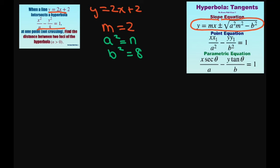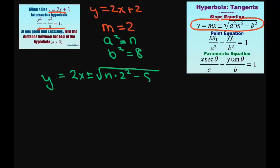So that's going to give me y equals, using my formula, 2x plus or minus square root of a squared — so a squared is n — times 2 squared minus b squared, so minus 8. This simplifies to y equals 2x plus or minus square root of 4n minus 8.